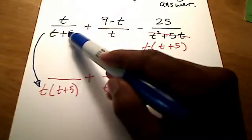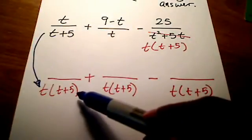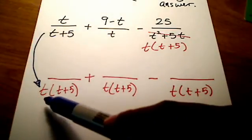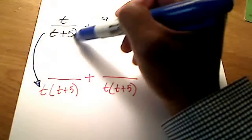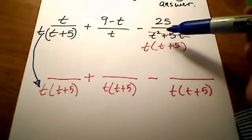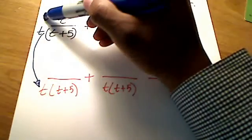Well, I hope you notice it already has the t plus 5. See that? So the only thing it's missing is the t. So if you multiply the bottom by t, you also multiply the top by t.